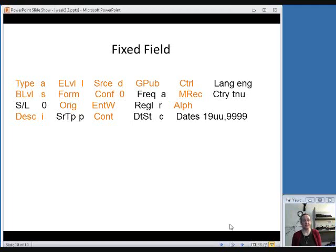The BLVL is S for serial. The S/L is for successive or latest entry. And zero is the term for successive entry. You'll notice things like the type of continuing resource, the frequency, the regularity, the date status, meaning it's still published now. That's why it's C. The dates and the language and the country code. So, those are the fixed fields for our example of Tennessee ancestors.